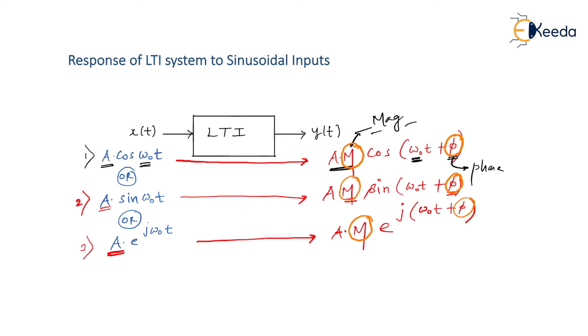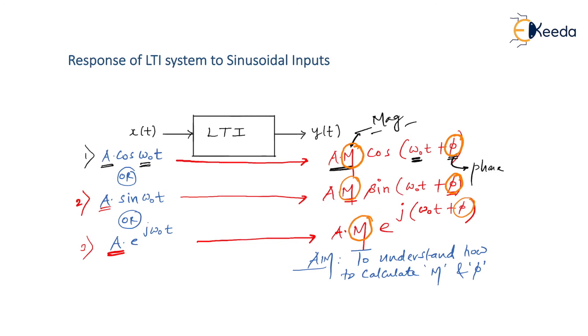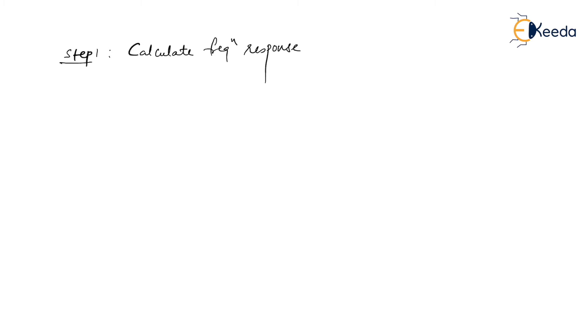So only two things need to be known: m (magnitude) and φ (phase). Our aim is to calculate m and φ, because once their values are known for a given input, we can easily calculate the output. Our discussion is limited to LTI systems — the system must be both linear and time invariant. Step one is to calculate the frequency response H(ω), which is sometimes also written as H(jω).